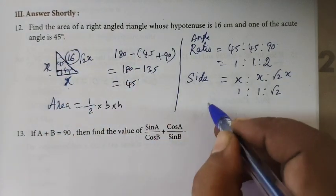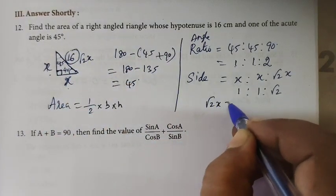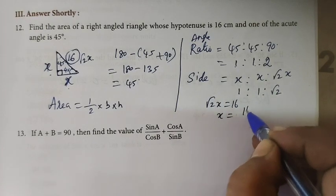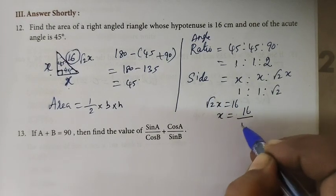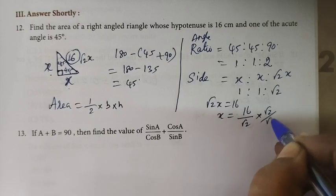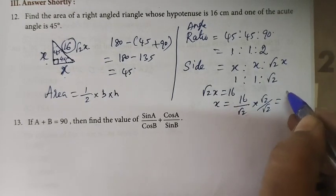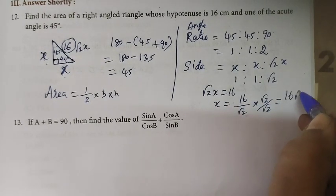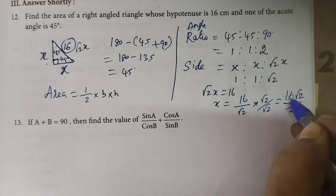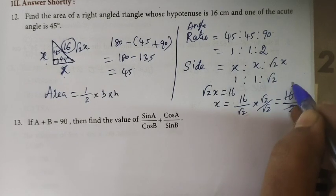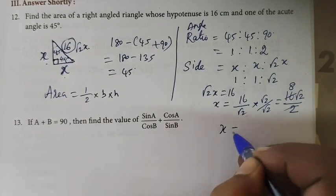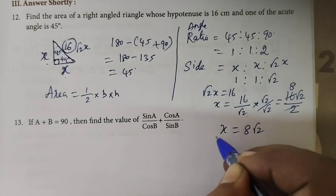Root 2x is equal to 16. Solving for x, we get x equals 8 root 2. So the value of x is 8 root 2.